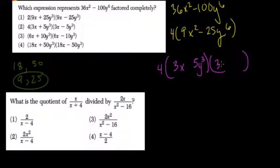And so now we have these two square roots, 3x and 5y³. We add one pair and subtract the other, and we're done. So we have 3x plus 5y³, times 3x minus 5y³, times 4. It's choice 2.